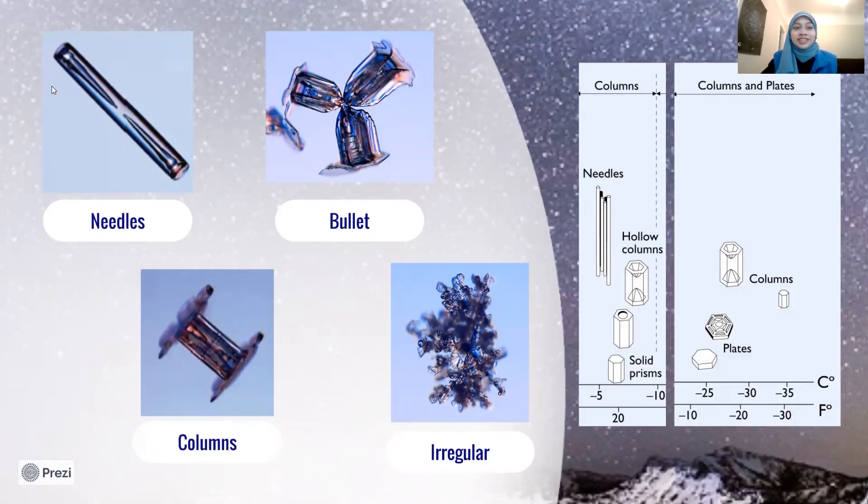Sometimes they occur as needles like this. You can see how the pointy tips kind of resemble needles, and these needles could either be solid, hollow, or partially hollow. Snow crystals can also come in the shape of six-sided columns. Now these columns can either be long and thin or short and squat like this one. And when the column-shaped snow is tapered at one end, they become what we call bullets. Bullet-shaped snow can also join together like this to form what we call icy rosettes.